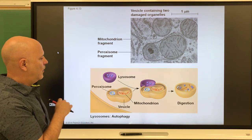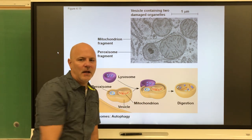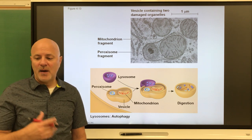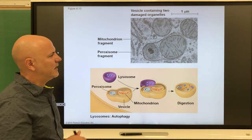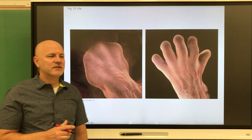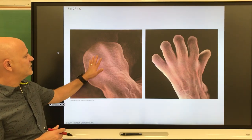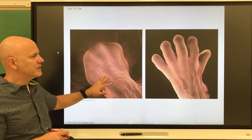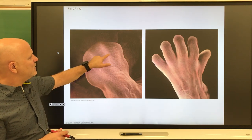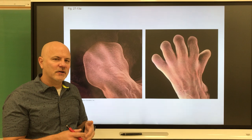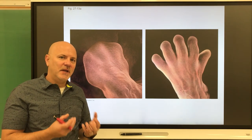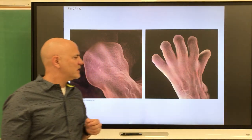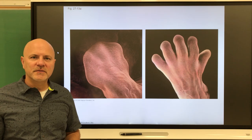Lysosomes can also break down old organelles. They are used for the process known as apoptosis — programmed cell death — which is used in development. Early in development, our hands form as fleshy folds. The cells between the fingers fill up with lysosomes; the lysosomes disrupt and those digestive enzymes kill those cells. This sculpts our limbs and organs.